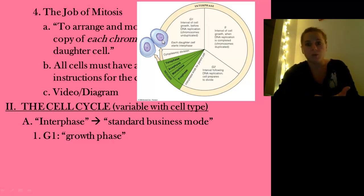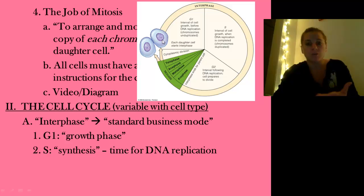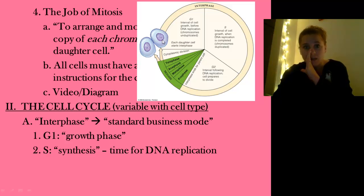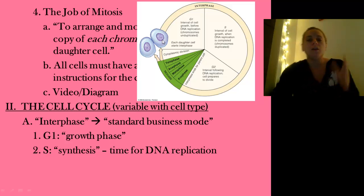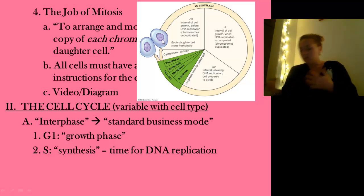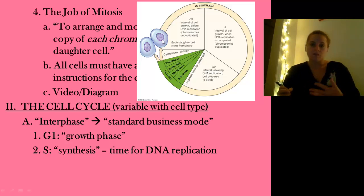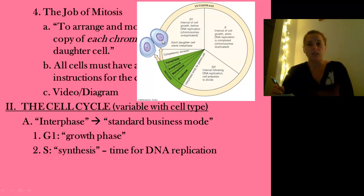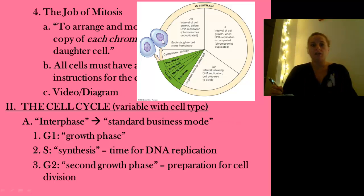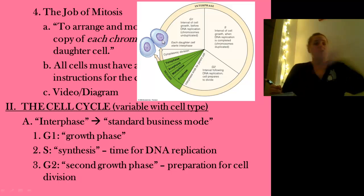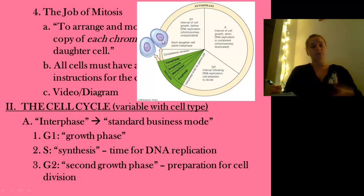We have G1, the first growth phase, where the cell just gets a little bigger — remember cell size and diffusion, why cells don't grow too big. Eventually the cell reaches a point where it needs to begin division, and it enters the S phase — synthesis — when the DNA actually replicates itself. Then we hit G2, the second growth phase, which is preparation for actual division: mobilizing organelles into the right location and getting everything ready. Those are the three steps of interphase.